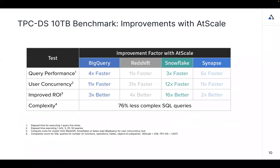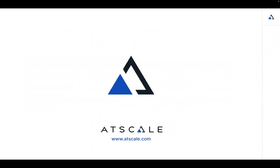If you want to see how a semantic layer with AtScale can improve query performance, we have benchmark reports — TPC-DS at 10 terabytes, which is about 60 billion rows. You can see how much faster we can deliver queries across different data platforms, and how much money we can save on data access costs. That's it for today's presentation — thank you all for listening. Shannon, I'll hand it back to you for questions.